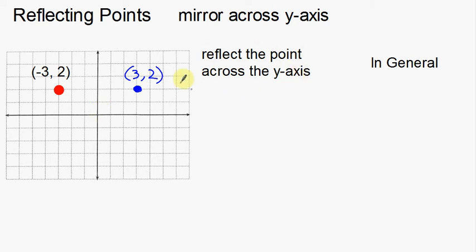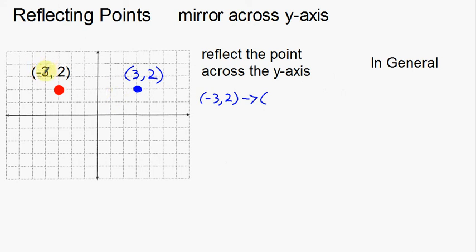So I reflect the point across the y-axis — what happened? I took my original point of negative three, two and changed it. Looking at the numbers: the x-coordinate went from negative three to three, and the y-coordinate stayed two to two. So the y-coordinate didn't change at all — it was the x-coordinate that changed. It looks like we just changed the sign, multiplying by a negative one, and left the y-coordinate alone to get the new point, which is positive three, two.